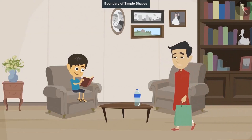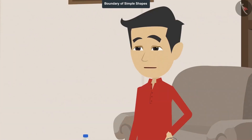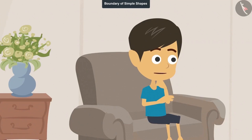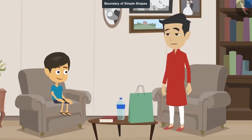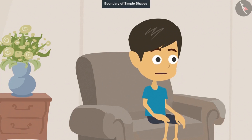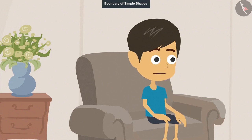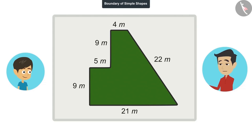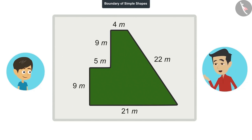Rayansh, I have bought the farm next to our farm. Now our farm is bigger than before. Does that mean its boundary would have also increased? Yes. And therefore, you have to find out the length of its boundary. Tell me the measurements of the edges of all sides and I will tell the length of the boundary. I have written the measurements of all sides of the field on this paper. You tell me the length of the boundary.